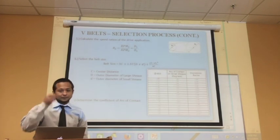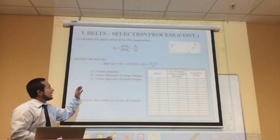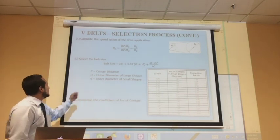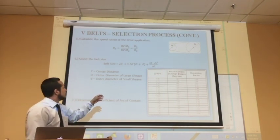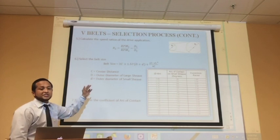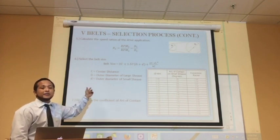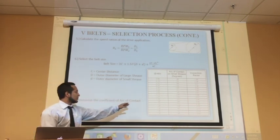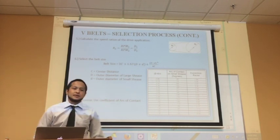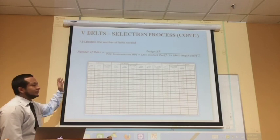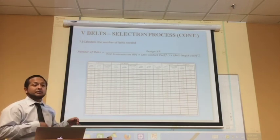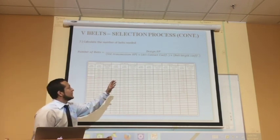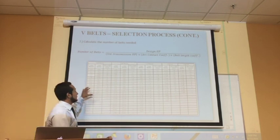The belt section will be either A, B, C, or D. Step 5 is to find the speed ratio of the drive application using the formula shown. Step 6, you select the belt size using the equation where C is the center distance, large D is the diameter of the large sheave, and small D is the diameter of the small sheave. Once that information is gathered, we use this table to determine the coefficient of arc of contact. Next, we calculate the number of belts needed using this formula, where we have all the information except the belt length coefficient, which can be determined using this chart.